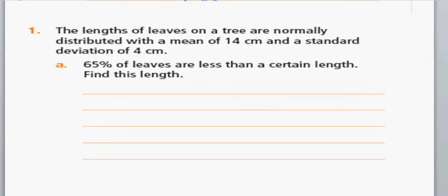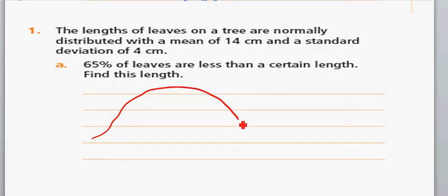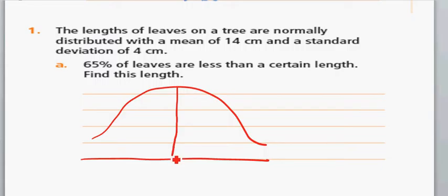Next question: The lengths of leaves of a tree are normally distributed with a mean of 14 cm and a standard deviation of 4 cm. 65% of the leaves are less than a certain length — find this length. This is a question of inverse normal. You are given the mean and standard deviation, and they have given you the probability.